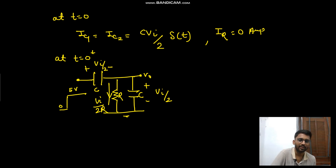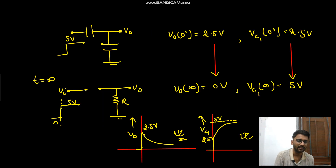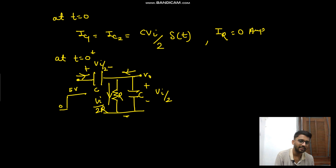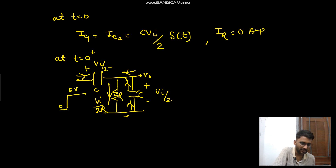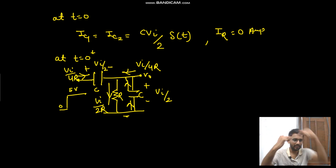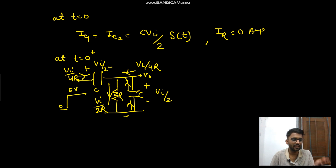In this direction we have v_in/2r current, and in the other direction we have v_in/2r current. Now C1 capacitor is getting charged — vc1 is increasing from 2.5 to 5 volt — and C2 is getting discharged. Both capacitors are charging or discharging at the same rate, so this current is v_in/4r and this also is v_in/4r. C2 is getting discharged with v_in/4r current and C1 is getting charged with v_in/4r current.